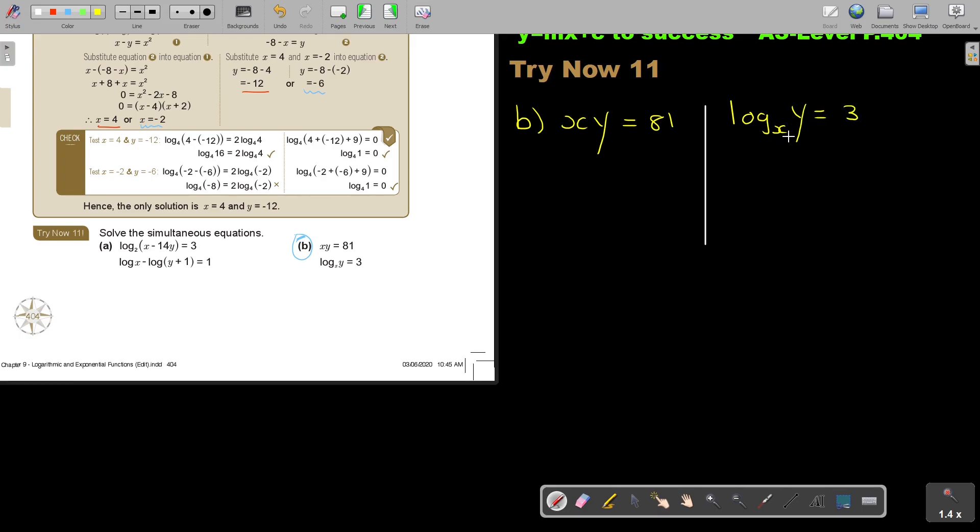So this one was log, and that small is an x and it's a y and it's 3. So in this case, we are going to go from logarithmic to exponential form. So x to the power of 3 is equal to y. So in this one, what will we make this subject? Let's make y the subject. So y is equal to 81 divided by x. So let's call this equation 1, this equation 2.